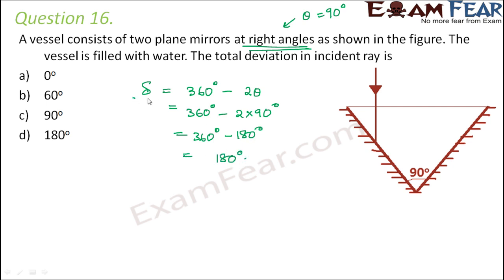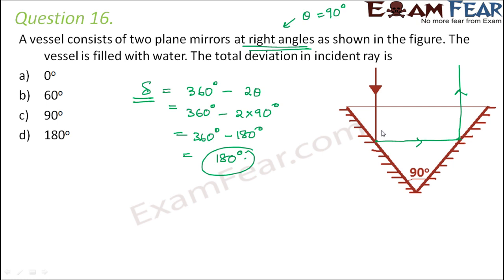So the total deviation in the incident ray is 180 degrees. The incident ray touches the first mirror, undergoes reflection, touches the second mirror, and undergoes reflection again. The reflected ray and incident ray are exactly in opposite directions, so the angle between them is 180 degrees. Option D is correct.